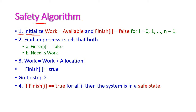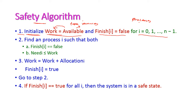Step 1 is the initialization step. Here, Work equals Available, and Finish[i] equals false for i = 1 to n-1, where i indicates the number of processes in the system. The available number of free resources is assigned to Work. Finish[i] equals false means initially no process has finished — all processes are not yet finished. For all i from 1 to n-1, that is, for all n processes.